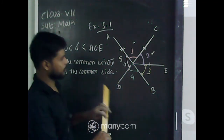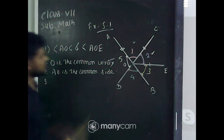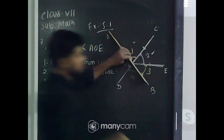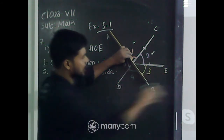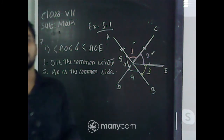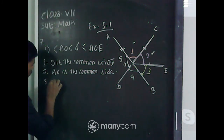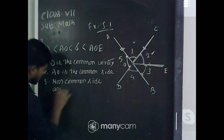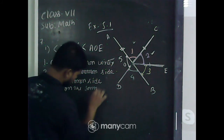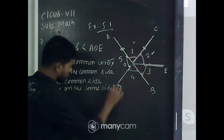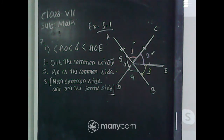Now the third condition: the common side is OA. The non-common sides are OC and OE. Look — both the non-common sides are lying on the same side of the common side. That means the non-common sides are NOT on different sides. Condition number 3 is not satisfied. Therefore, angles AOC and AOE are not adjacent angles.